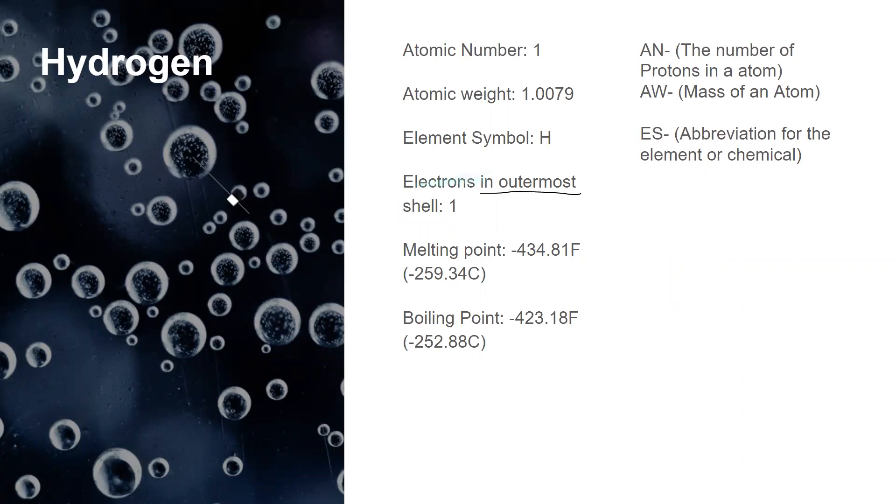Okay, back to topic. So also, there's something called atomic weight, and it's 1.0079. And that means the mass of an atom, it's the atomic weight. And the element symbol is H. What element symbol means is it's basically an abbreviation for the element or chemical. And you can also see the melting point and the boiling point.